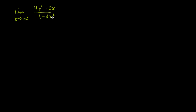And if you put really large numbers in the denominator, well, 3x squared will approach infinity, but we're subtracting it. So if you subtract infinity from some non-infinite number, this is going to be negative infinity. So if you were to evaluate it at infinity, the numerator gives positive infinity and the denominator gives negative infinity. And that's one of the indeterminate forms that L'Hôpital's rule can be applied to.